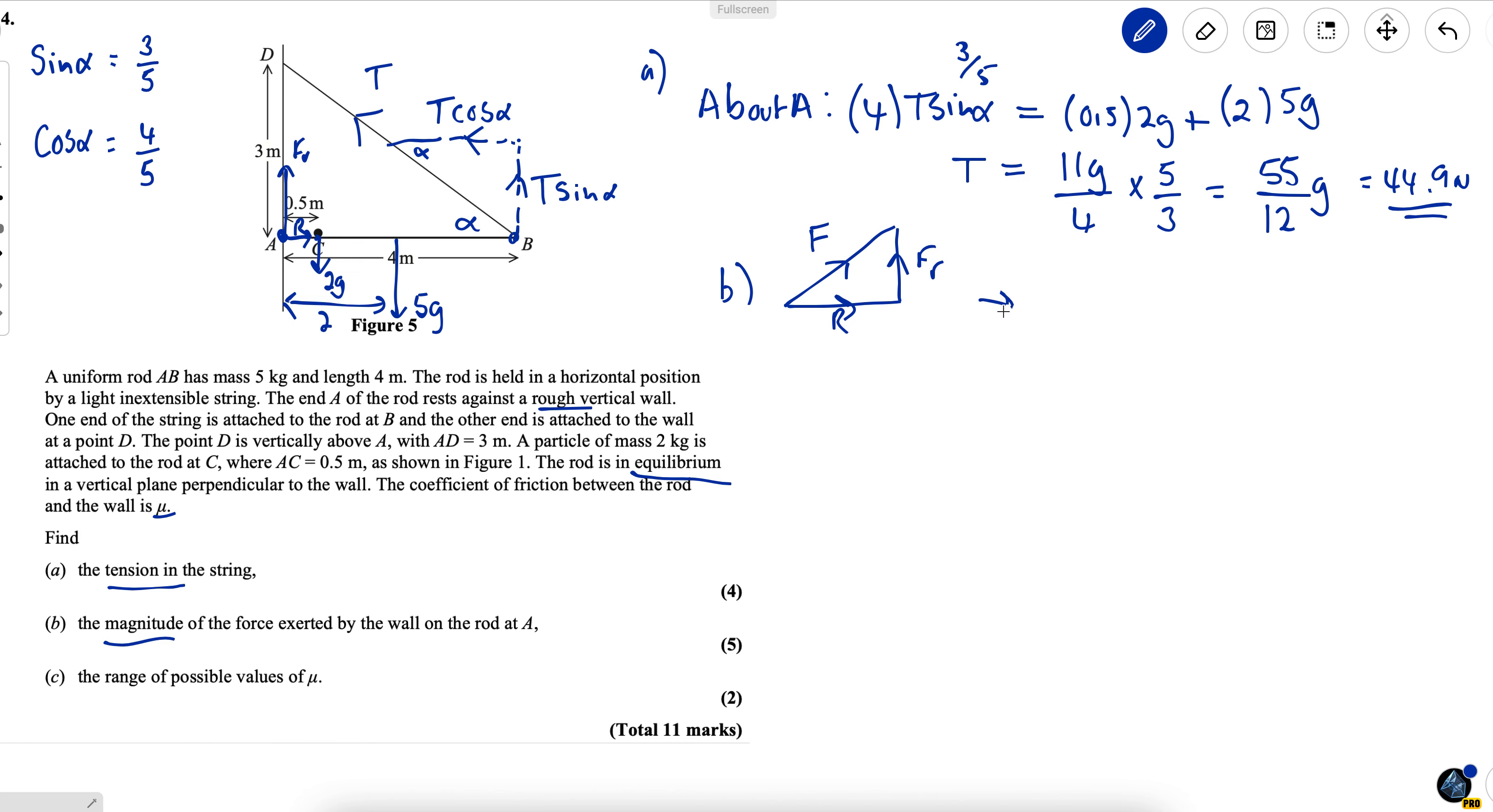First I'm going to resolve horizontally and that will give me R because I've got R to the right and T cos alpha to the left. So R equals T cos alpha which equals 55 over 12 G multiplied by 4 fifths which simplifies to 11 over 3 G. I'll leave that as an exact value.